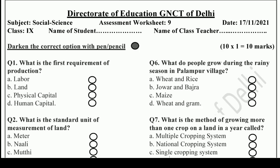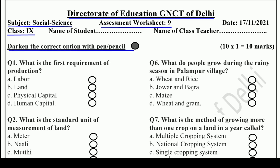Hello and welcome to Lavneesh Sharkey's class. This is Directorate of Education GNCT of Delhi's Assessment Worksheet No. 9, only for class 9 students, taken from the subject Social Science. There are 10 multiple choice questions. We have to choose the correct option with a pen or pencil — make it black or dark. So without wasting our time, let's start.